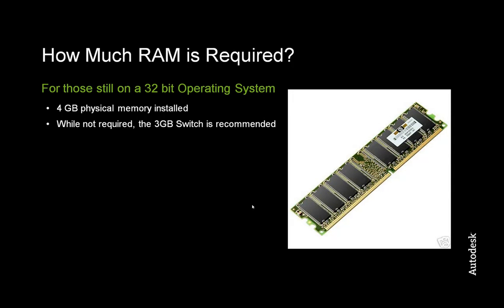So how much memory is required? I'm still going to talk about both 32-bit operating systems and 32-bit versions of Civil 3D, as I realize not everyone is going to upgrade immediately. For those still on a 32-bit operating system, whether it's XP, Vista, or Windows 7, the maximum physical RAM that can be installed is 4GB. Additionally, while not required, we do recommend that you utilize the 3GB switch, which we will talk about in greater detail a little later.